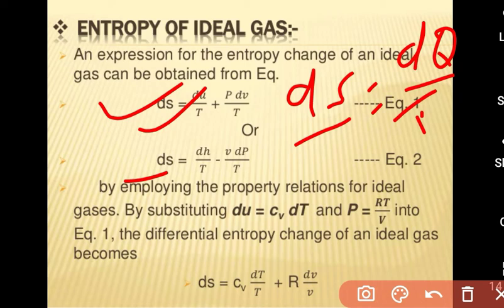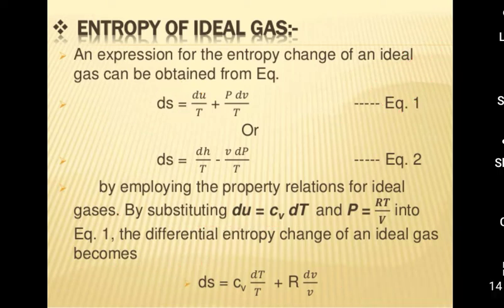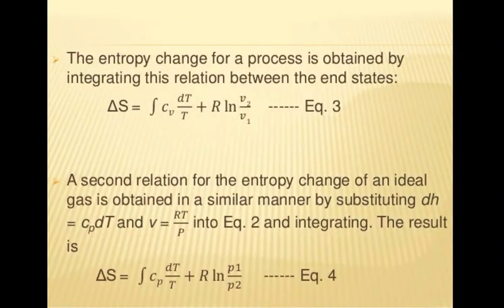By employing the property relations for ideal gases — substituting dU = Cv dT and p = RT / V — the entropy change of an ideal gas becomes: dS = Cv dT / T + R dV / V. Integrating this relation between the initial and final states gives: ΔS = Cv ln(T2/T1) + R ln(V2/V1).